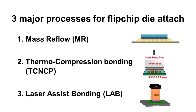There are three major processes for flip chip attach: mass reflow, thermal compression bonding, and laser assist bonding. The most popular one is mass reflow. After flip chip attach, this process uses reflow to make electrical interconnection.